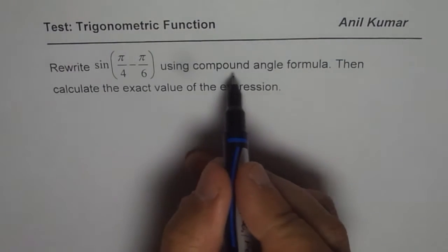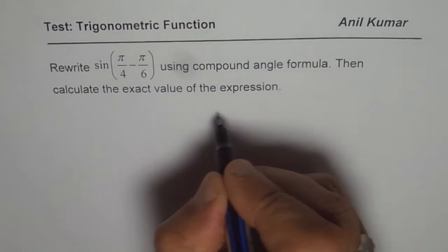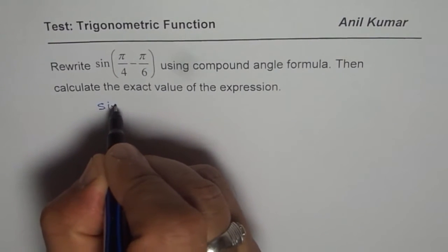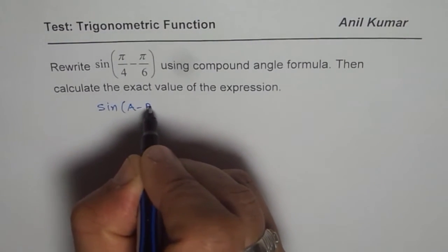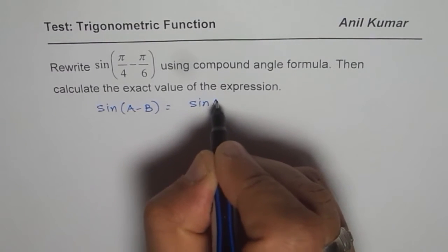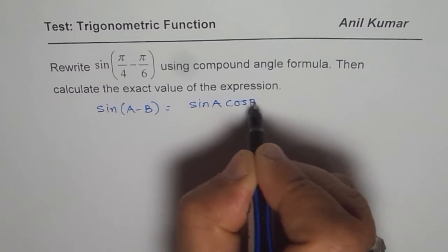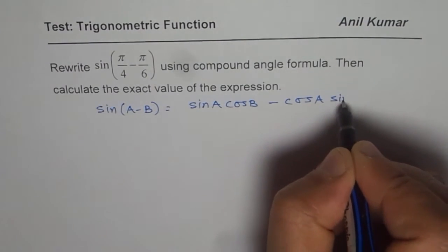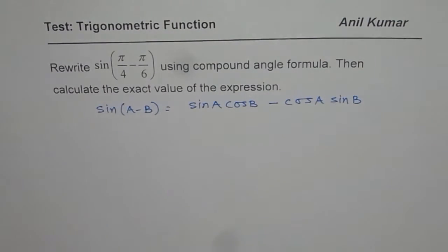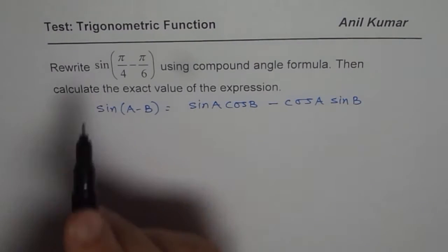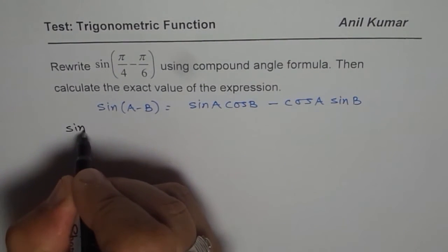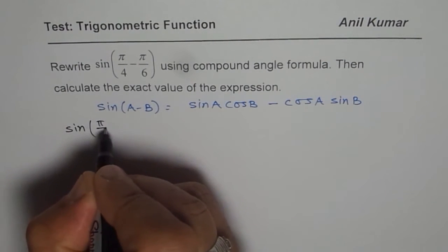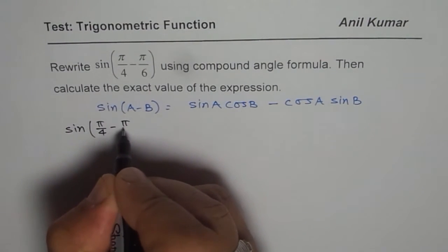So the compound angle formula which we are talking about is sin(A - B) equals sin A cos B minus cos A sin B. We will apply this particular formula to expand, simplify, and then find the exact values of the given expression which is sin(π/4 - π/6).